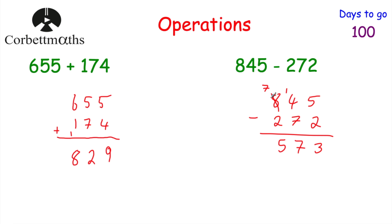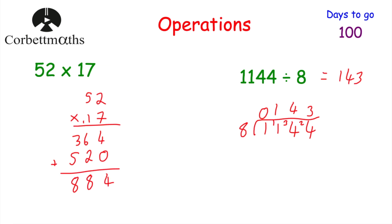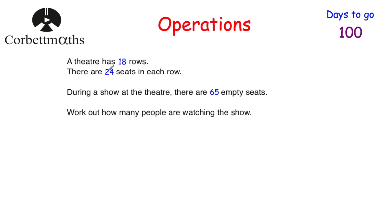So we've covered addition, subtraction, multiplication and division. Now let's have a look at a wordy question, because sometimes you get questions in context involving combinations of these operations. It's important you're able to tackle these. So: a theater has 18 rows with 24 seats in each row, and during a show there are 65 empty seats. Work out how many people are watching the show. Pause and try it yourself if you wish.